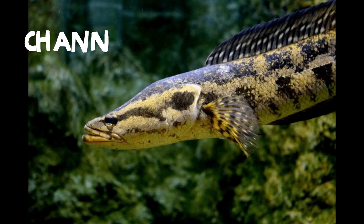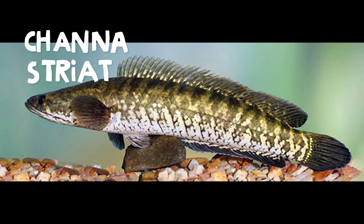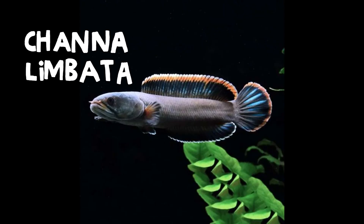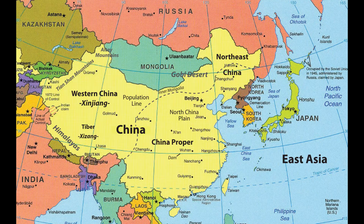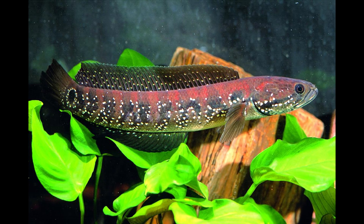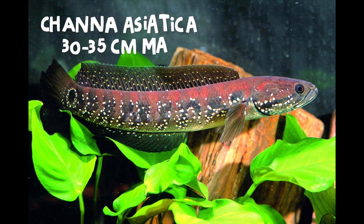In Southeast Asian countries such as Thailand, Myanmar, Malaysia, and Indonesia, you can find chana micropeltis, chana lucius, chana striata, and chana limbata. In East Asian countries such as China, Korea, and some parts of Russia, you can find chana argus and chana asiatica.